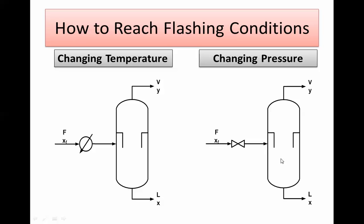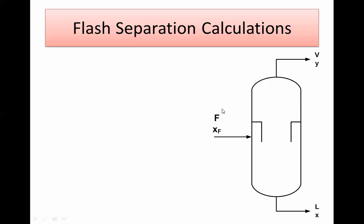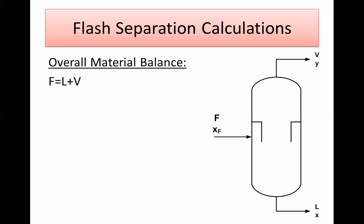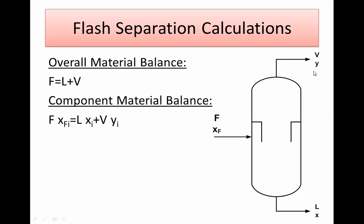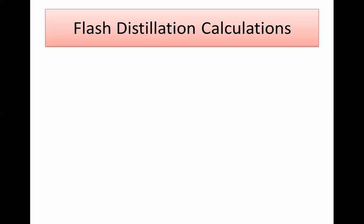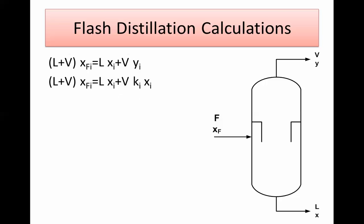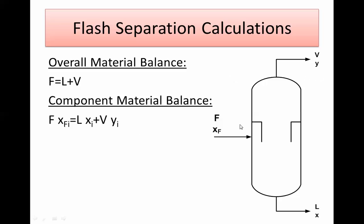Now let's see how we do the calculations. You have your feed with known flow rate and composition, vapor coming out the top with composition Y, and liquid at the bottom with composition X — for as many components as you have, whether 3, 4, 5, 10, or 20. The calculations start with material balance: the overall balance is Feed F equals L plus V. Then the component material balance is F times X_F equals L times X plus V times Y, applied for each and every component.